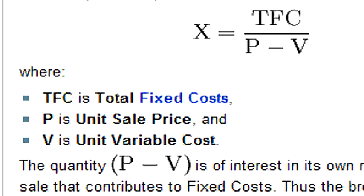In order to calculate the break-even point, you take the fixed cost and you divide it by the price of the product subtracted by the variable cost.